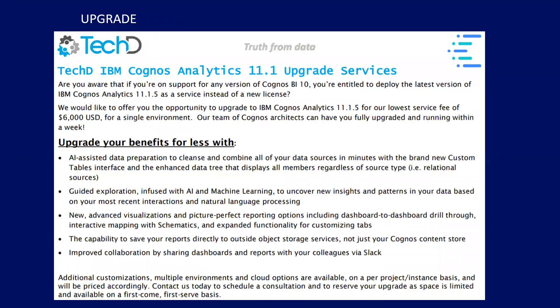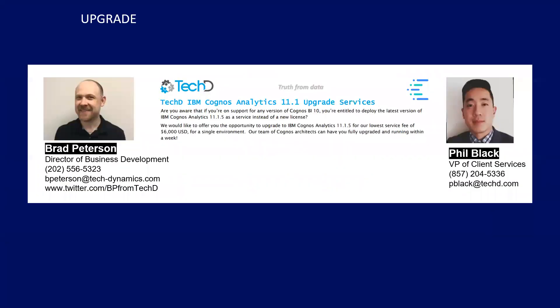We are doing an upgrade special now. If you're on an older version of 11 or on Cognos 10 and up on maintenance, you're allowed to upgrade to the latest iteration completely free. TechD has created an upgrade package — for $6K per single-server environment, we'll upgrade to the latest iteration, do some regression testing. No hourly rate, no days estimate — just one number. If you have questions, reach out to Brad or Phil; I'll send out the slide deck with everyone's contact info.